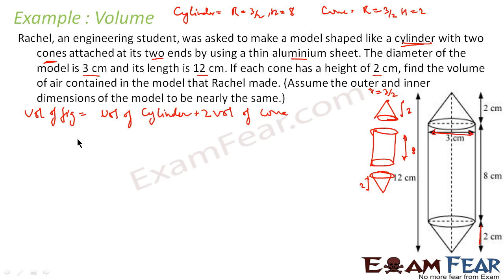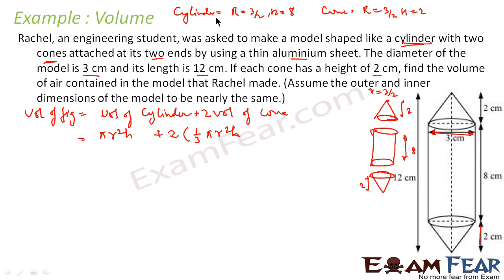Volume of cylinder is πR₁²H₁ and volume of cone is (1/3)πR₂²H₂. Let cylinder dimensions be R₁ and H₁, and cone dimensions be R₂ and H₂ to avoid confusion. So this becomes π(3/2)² × 8 plus 2 × (1/3) × π × (3/2)² × 2.